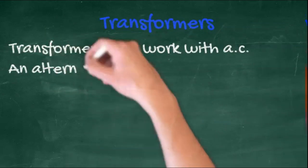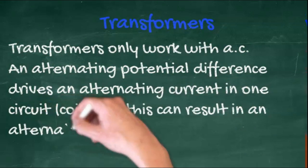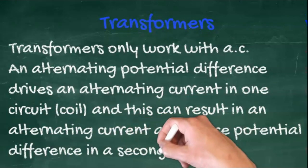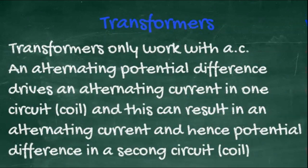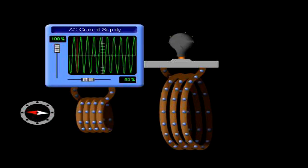Transformers only work with alternating current, an alternating potential difference driving an alternating current in one circuit, and this can result in an alternating current, and hence an alternating potential difference, in a second circuit. Transformers do not work with direct current. They do, however, work with AC, alternating current.